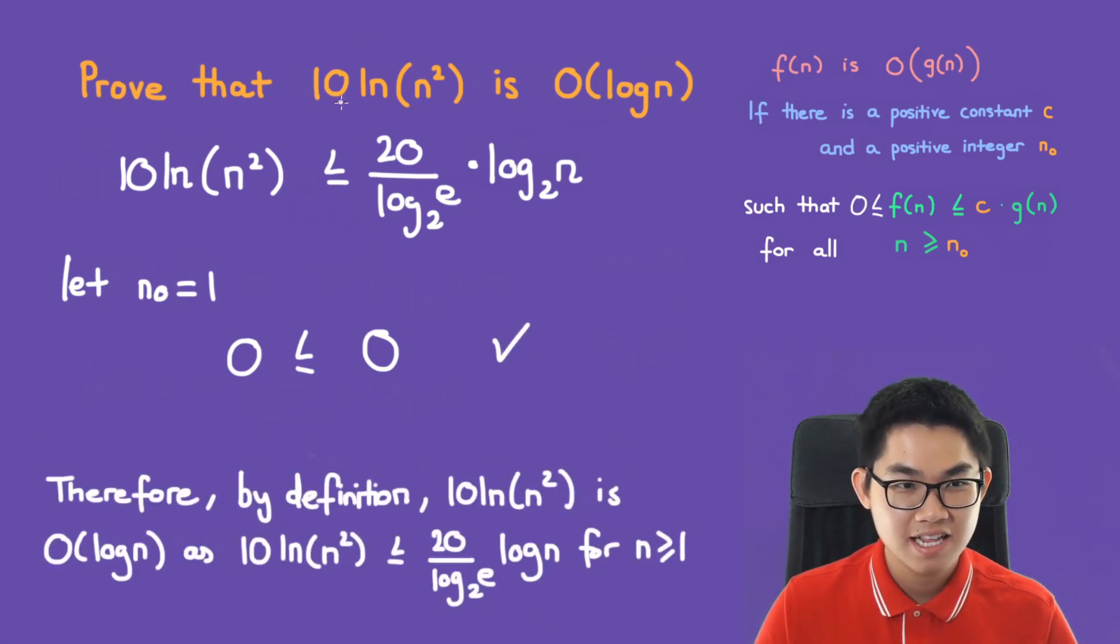And by definition, 10 ln of n squared is O log n, as this is less than 20 over log base 2 of e times log of n, where n is greater than or equal to 1.